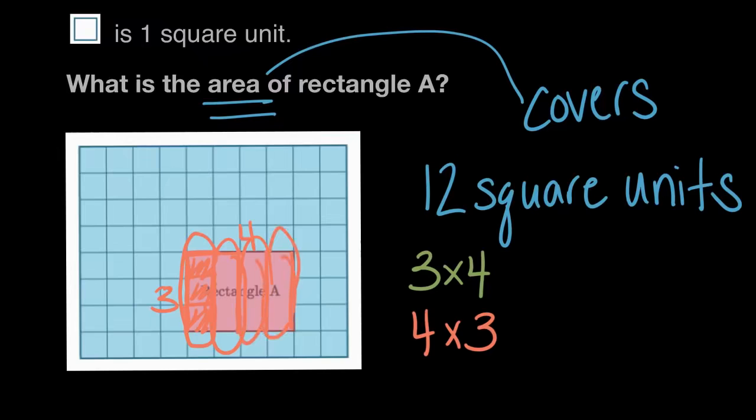So no matter which of these we solved, whether we counted the square units like in the beginning, or we multiplied the side lengths, the three and the four, in every case we're going to find that this equals 12 square units. The area of rectangle A is 12 square units because it covers 12 square units.